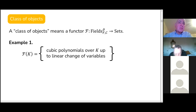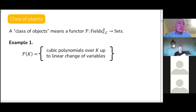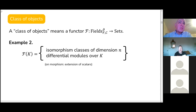Given the field k, let's consider cubic polynomials over k. Writing it as a functor is really just a way to organize that for each field, we consider those cubics over those fields. And similarly, we might also want to consider other classes of objects in differential algebra, like differential modules over a given field k.